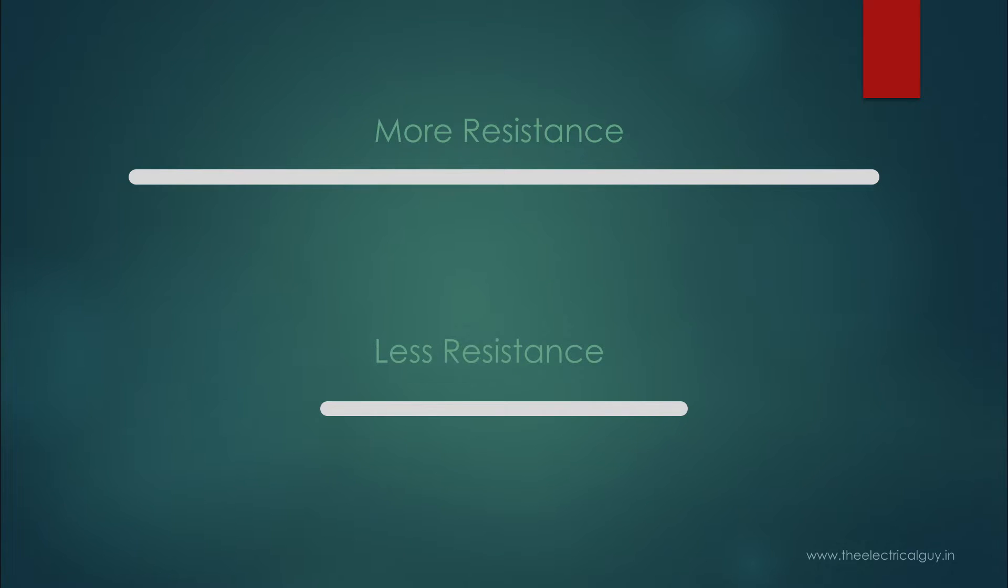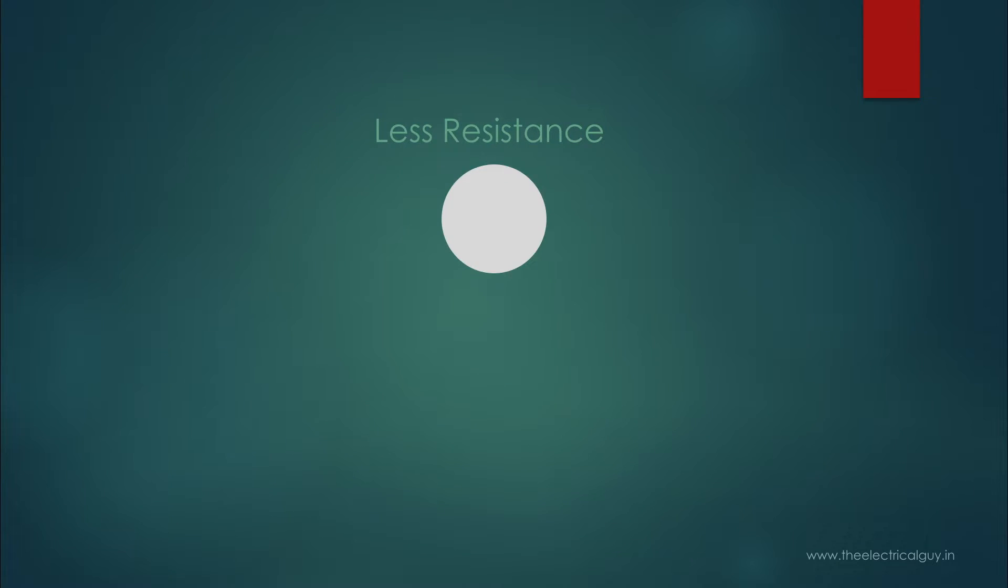Second, it is inversely proportional to the cross-section area of conductor, which means with the increase in cross-section area of conductor, resistance reduces and vice versa.